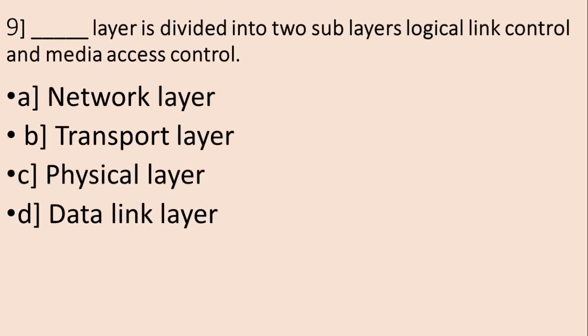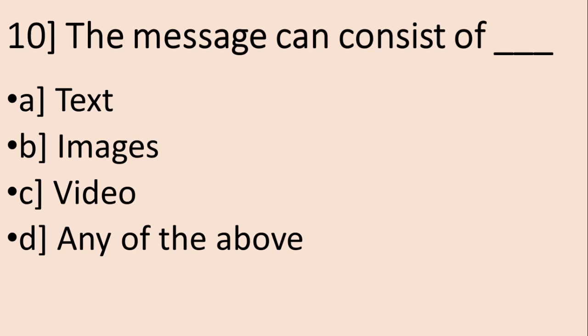Question number 9: Dash layer is divided into two sub-layers — Logical Link Control and Media Access Control. A. Network Layer, B. Transport Layer, C. Physical Layer, D. Data Link Layer. The correct answer is D, Data Link Layer.